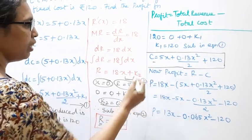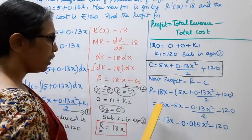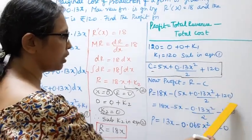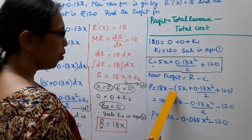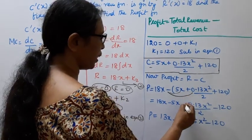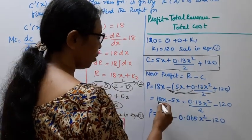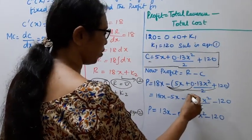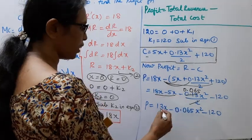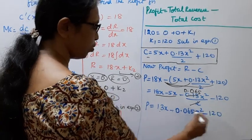Now profit P = R − C = 18x − (5x + 0.13x²/2 + 120). Simplifying: 18x − 5x = 13x, and 0.13/2 = 0.065. Therefore profit P = 13x − 0.065x² − 120.